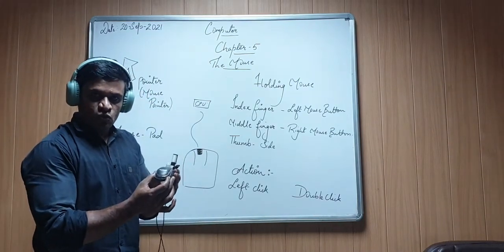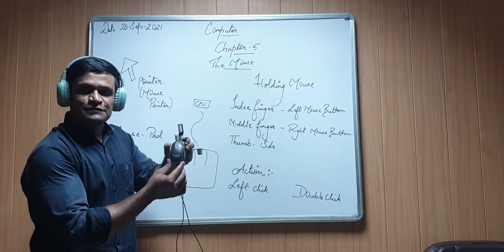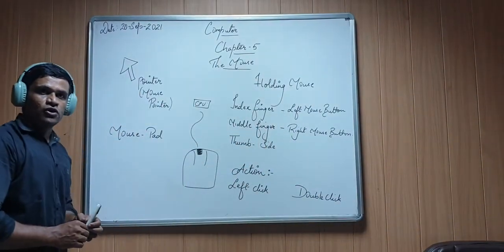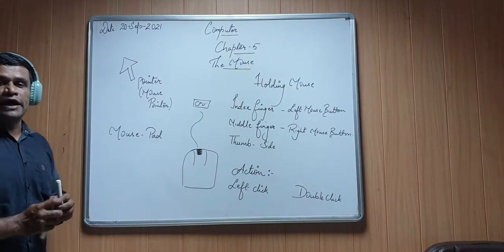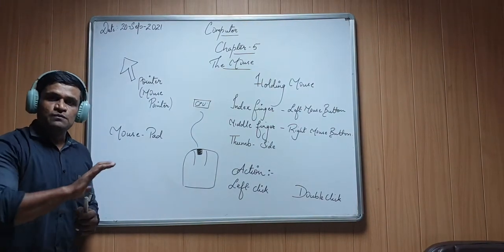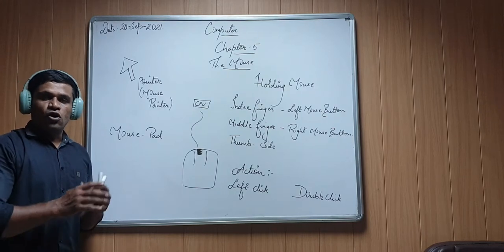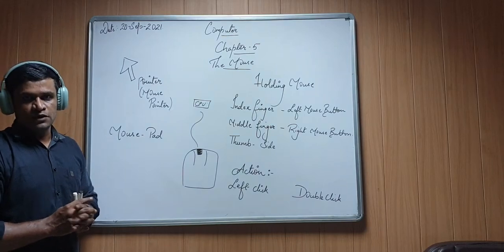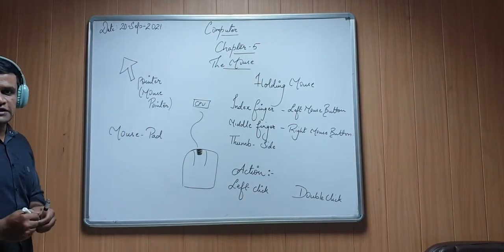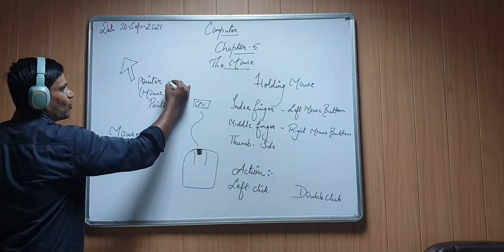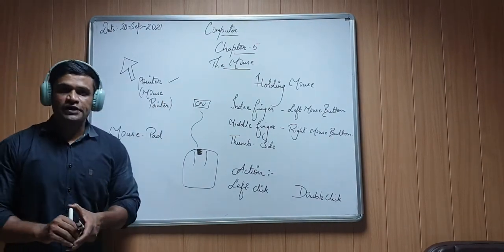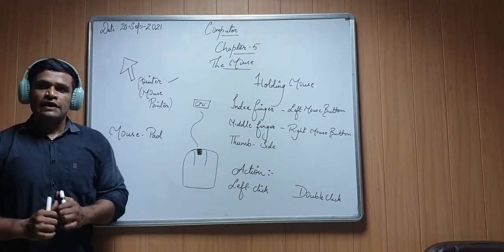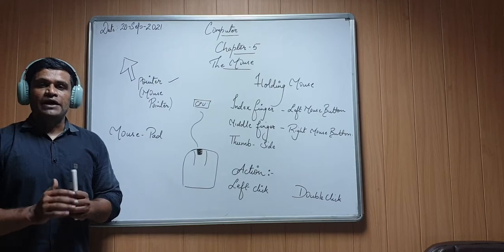Now, what is the use of this mouse? What is the use of this small device? As you all have seen, on your computer screen we have a pointer or an arrow sign which is moving over the screen on different icons and different parts of the screen. This arrow sign is known as the pointer, or mouse pointer, and it is controlled by the use of the mouse.